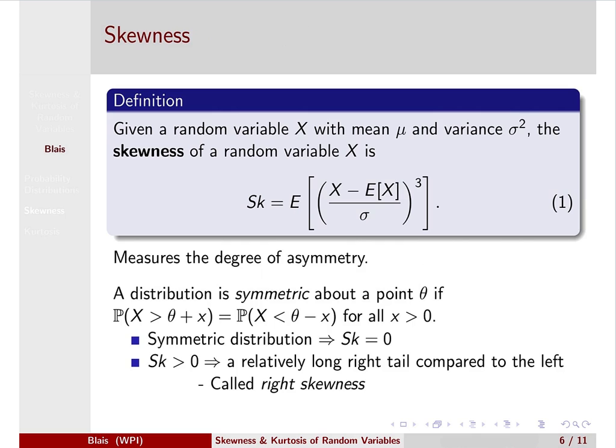Let's give some definitions. When you study random variables, typically we look at the first two moments — we look at the expectation and then the variance. We can think of this as dealing with the first two moments of the random variable: the expectation of x for the mean, and essentially the expectation of x squared for the variance.